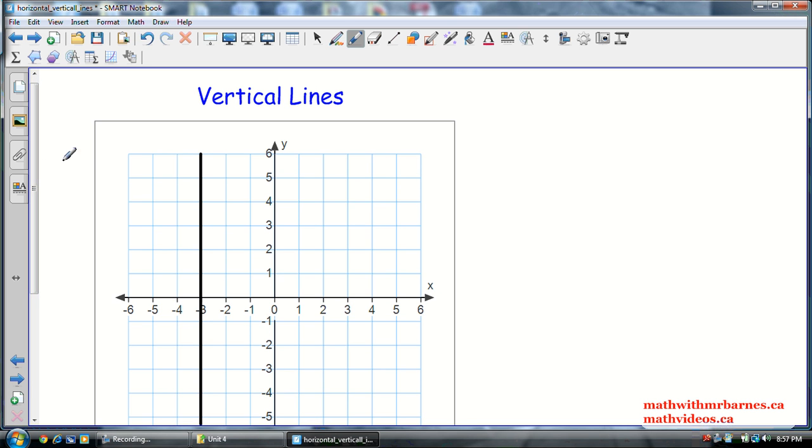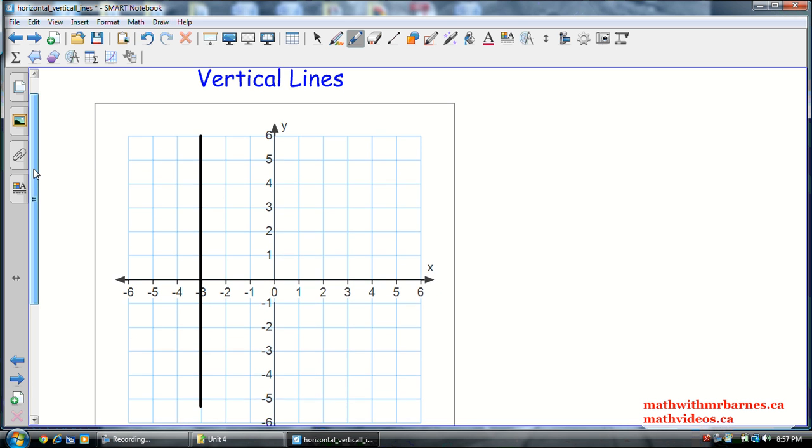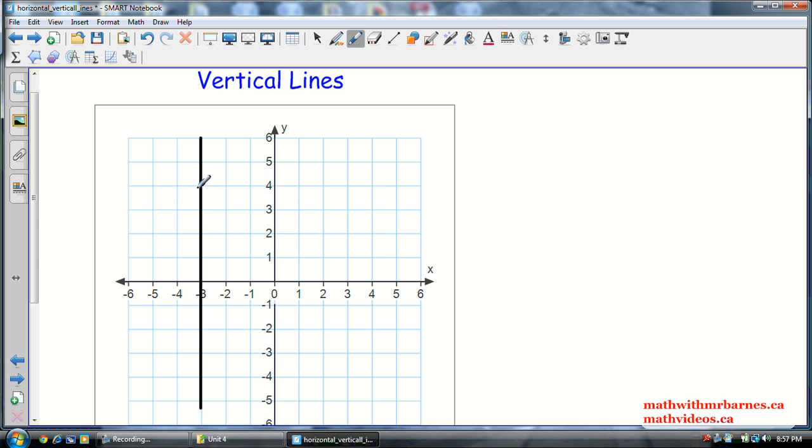All righty, vertical lines. So vertical lines go up and down, and very much the same thing. Let's take a few points on this thing. So I'll take one here, one here, and down here. So this point is negative 3 and 4. This point is negative 3 and 1. This point is negative 3 and negative 2. So if you look at this, x is not changing, x is staying the same, and y is changing. So it doesn't matter what x does, y keeps changing all the time, or it doesn't matter what y does, x stays the same.